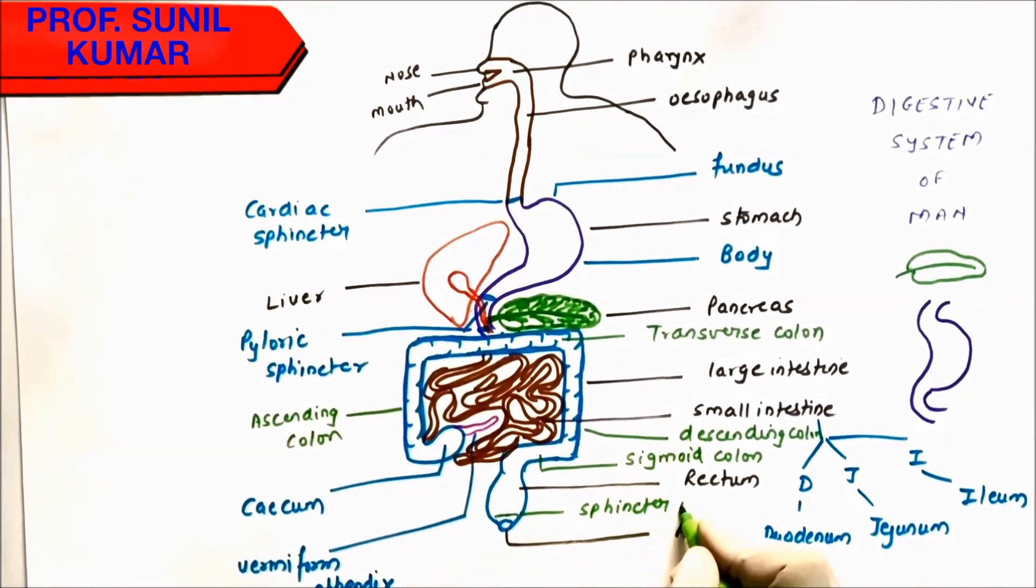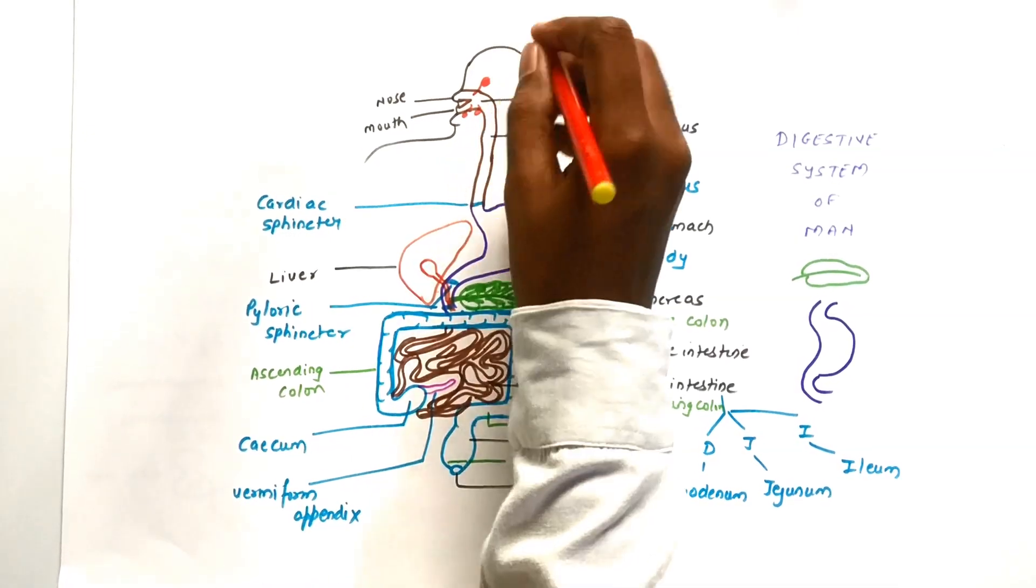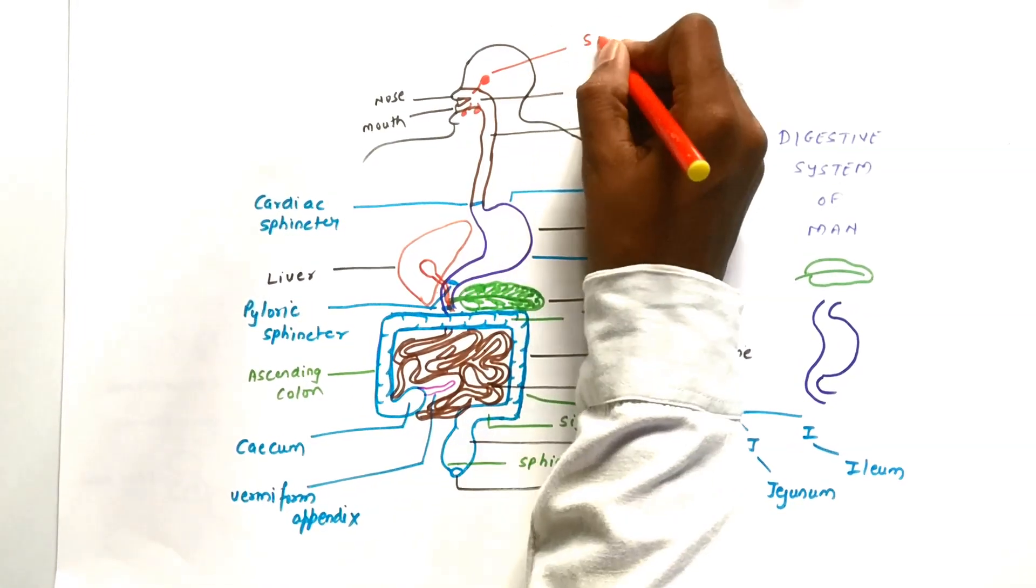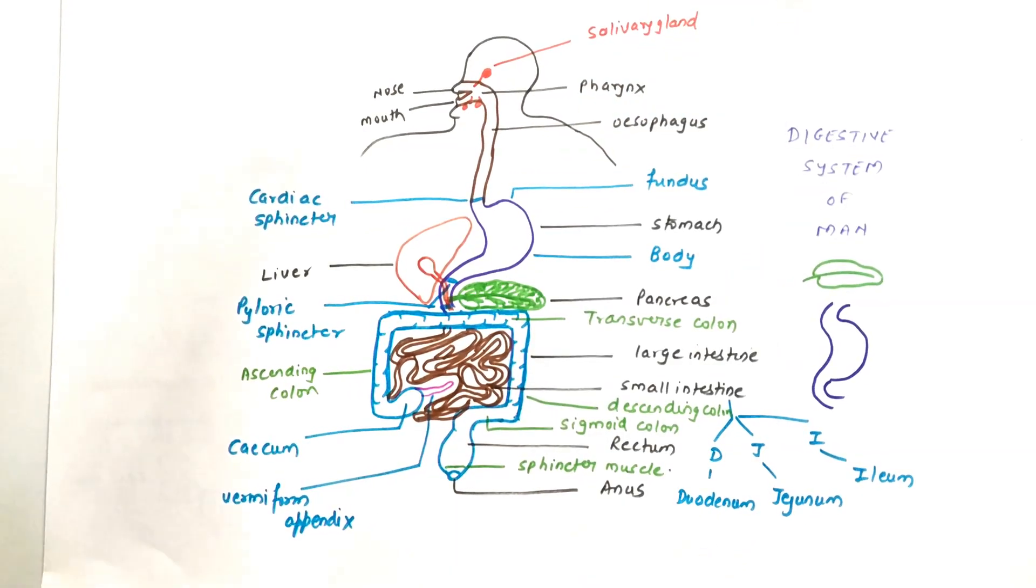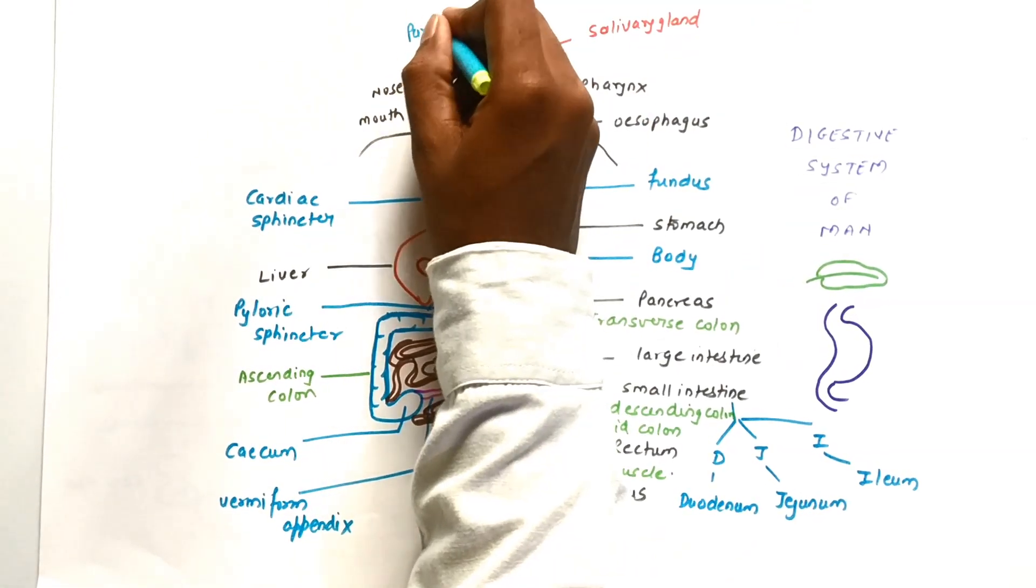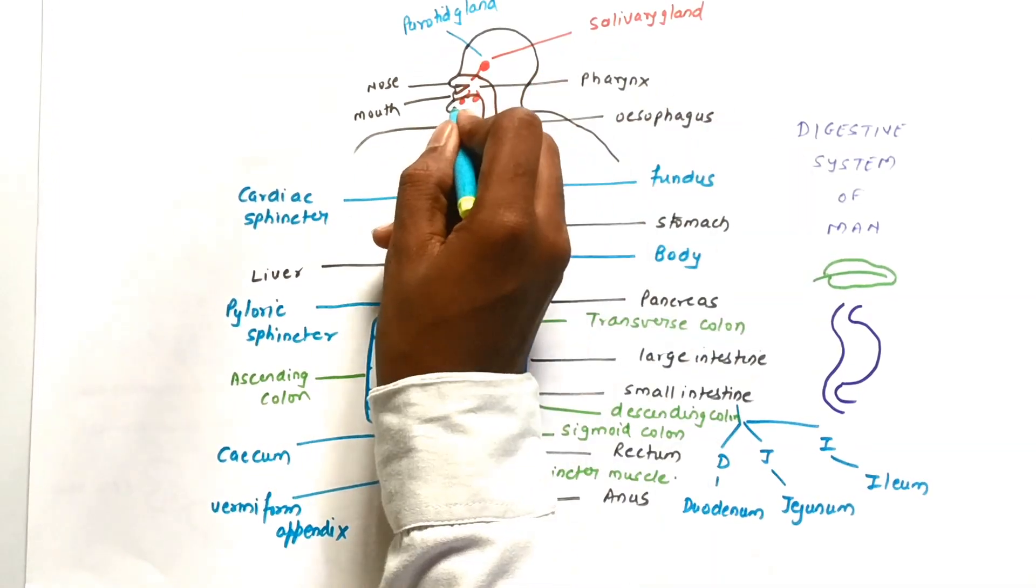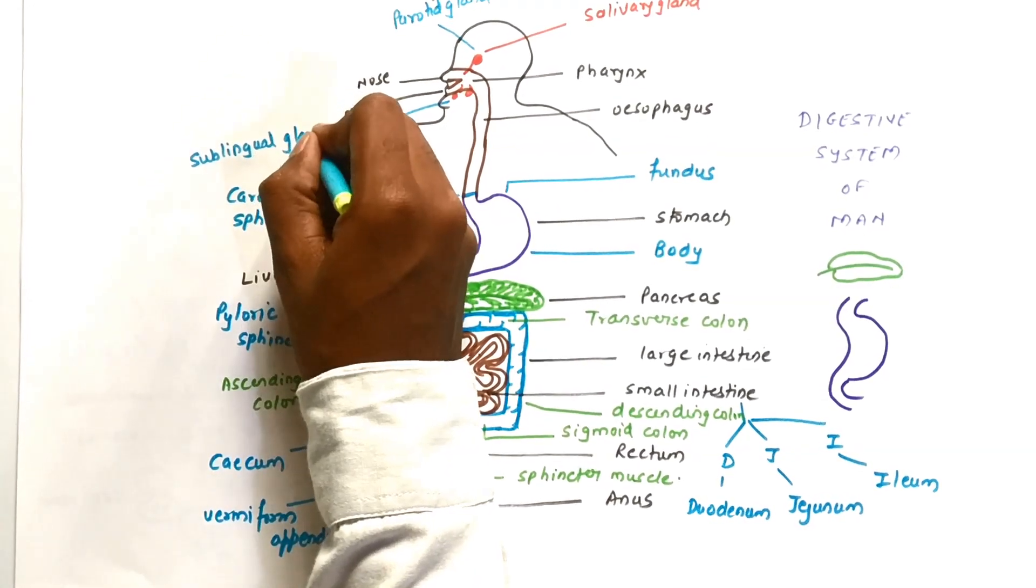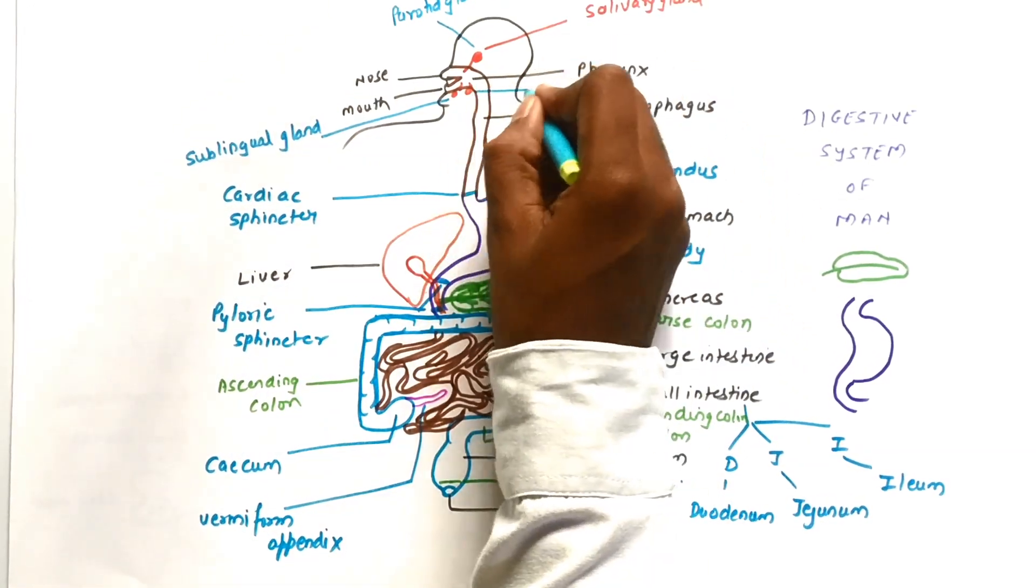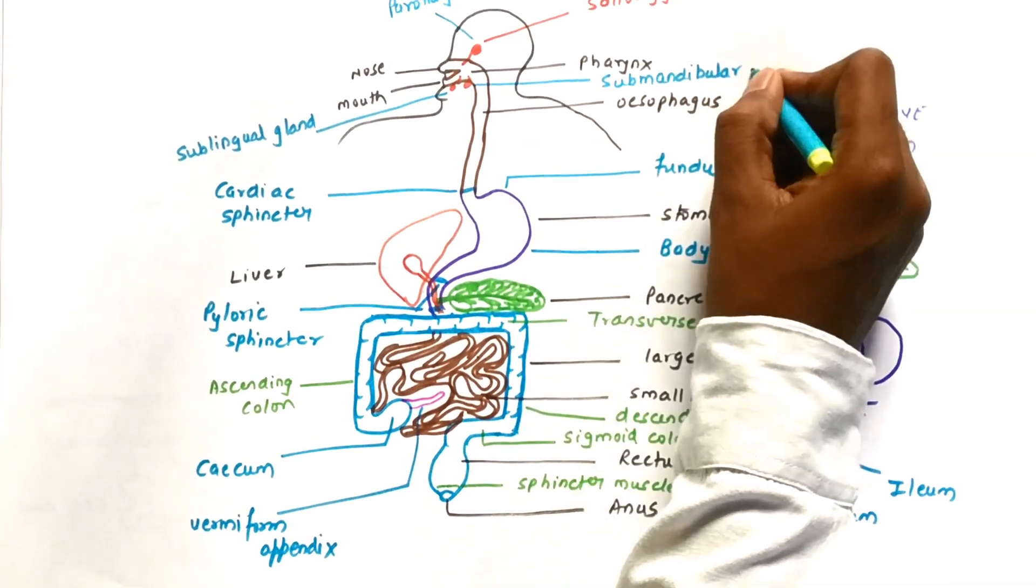There is a salivary gland present in the mouth. There are three pairs of salivary glands: one that is present near the ear, called the parotid gland; one below the tongue, called the sublingual salivary gland; and another one near the mandible, which is called the submandibular salivary gland.